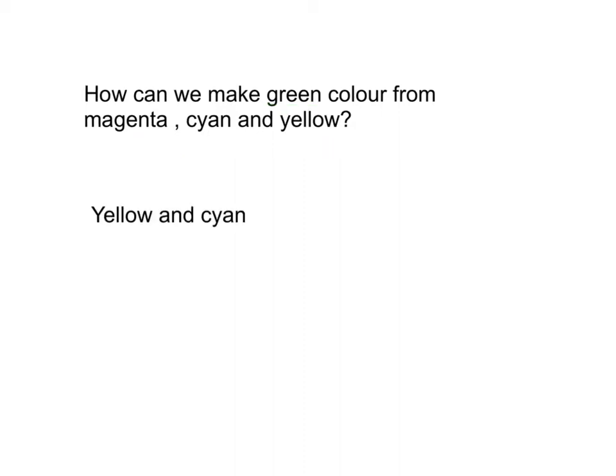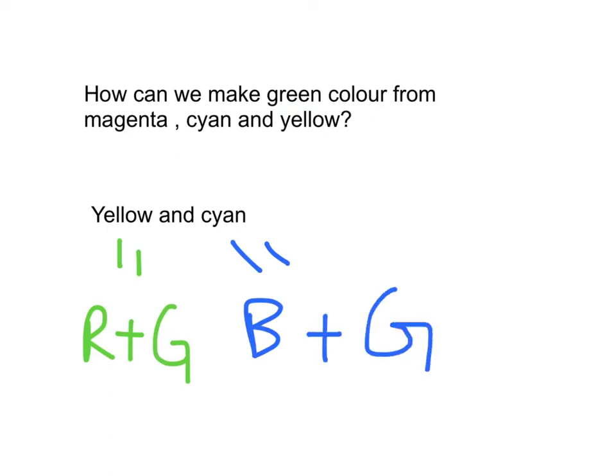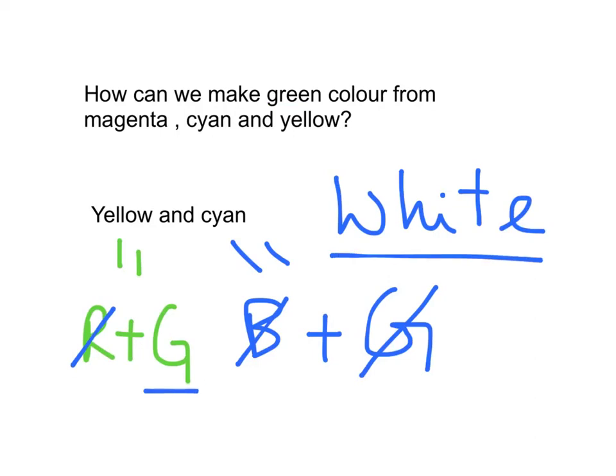The answer is yellow plus cyan. Because yellow itself is equal to red plus green, and cyan is equal to blue plus green. Remember the red, the green and blue forms white color. So eventually you will only have white plus green, leaving the green color alone.